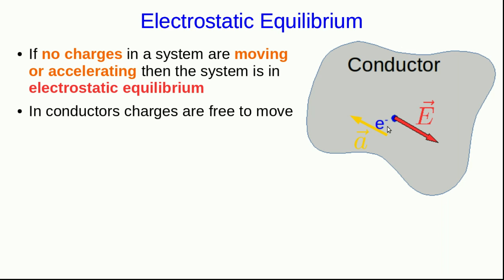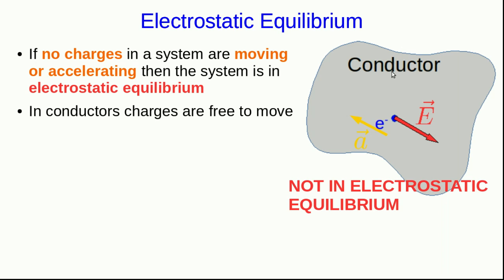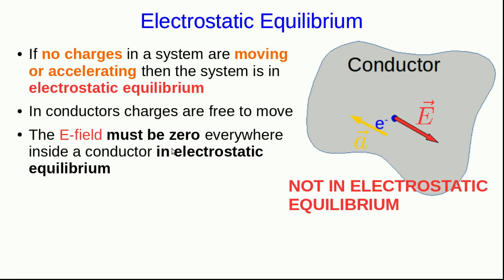Notice it's now accelerating, so this conductor is not in electrostatic equilibrium. If there's an electric field anywhere inside the conductor that's non-zero, then the conductor can't be in electrostatic equilibrium because charges inside it will accelerate. So the E field must be zero everywhere inside a conductor that's in electrostatic equilibrium. Note — I'm not saying the electric field can't ever be non-zero inside a conductor. What I'm saying is that if the electric field in a conductor is non-zero, then that conductor must not be in electrostatic equilibrium. Also note that this argument doesn't apply to an insulator because the charges inside an insulator are not free to move.